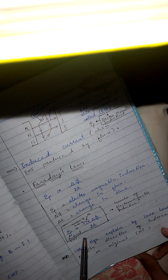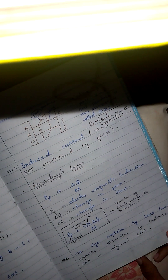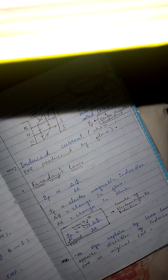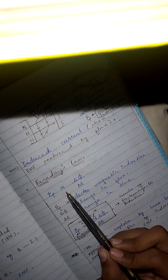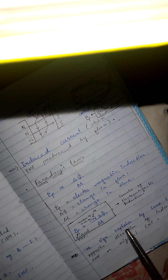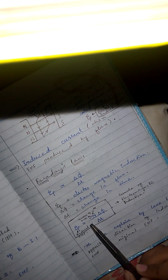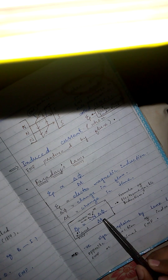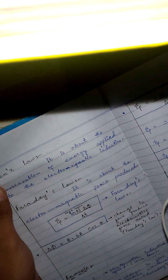This is the formula of electromagnetic induction. The induced EMF is equal to — in place of directly proportional we use a minus sign. This minus sign is explained by Lenz's law. N is the number of turns, and the rest remains the same.